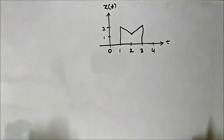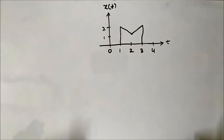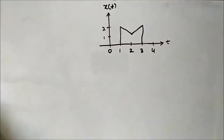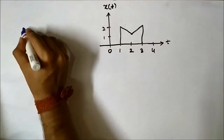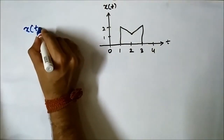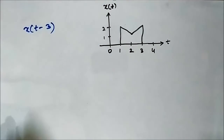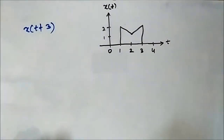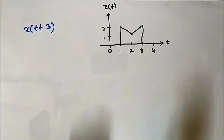Here we have this M-shaped signal XT, and we have to perform time-shifting operations on it. Let us first do the operation XT plus 3 — first let's do plus, and then we'll do minus.